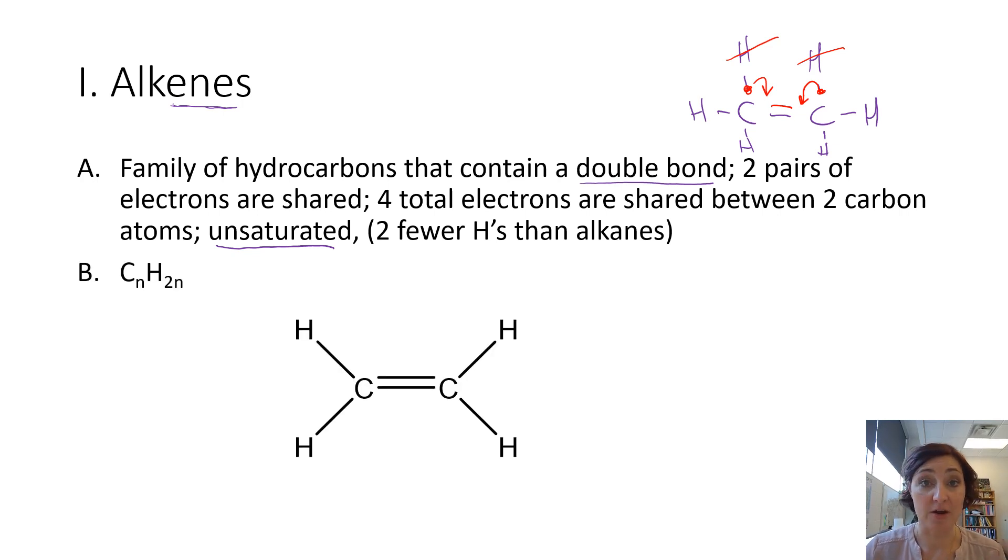So when we talk about the generic formula for this, this is a much better picture than mine, we say a certain number of carbons, N, and to determine how many hydrogens we're going to have, we just say two times N. If you remember from alkanes, we added the additional two, but we don't need to now because alkenes have two less hydrogens than an alkane.